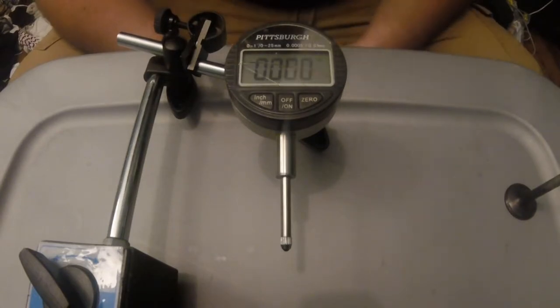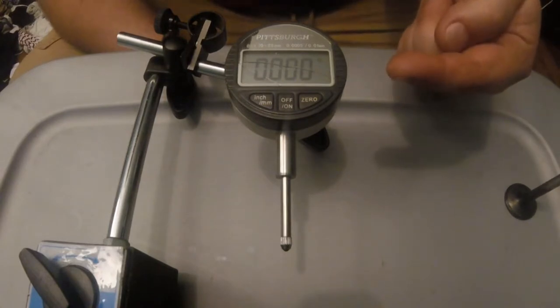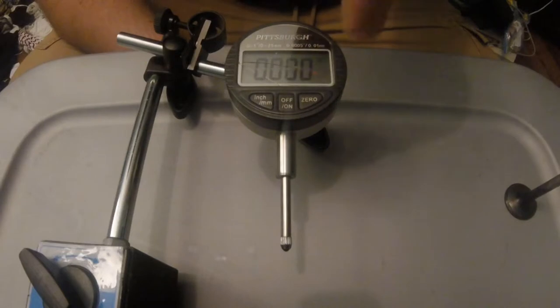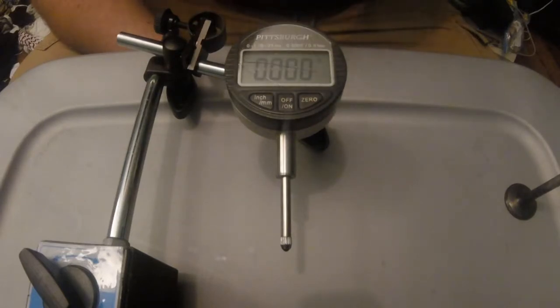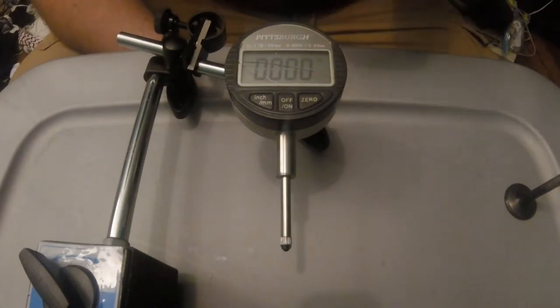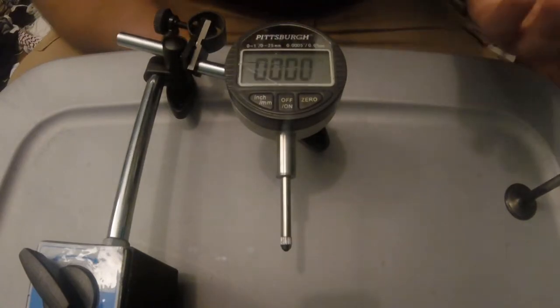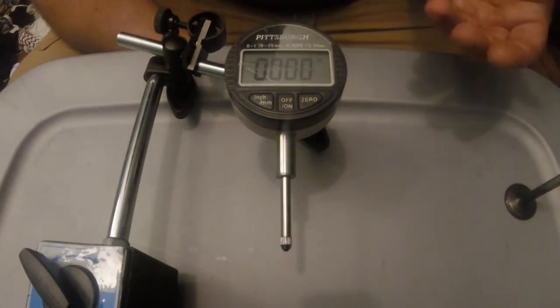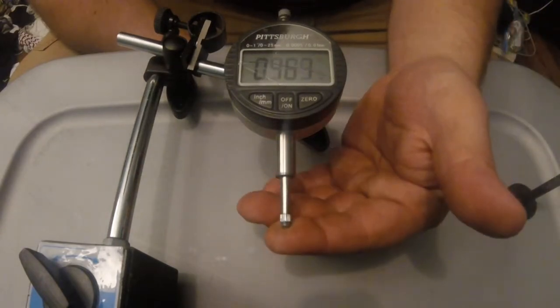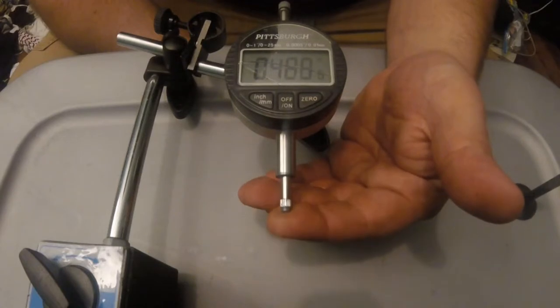Today we're going to be talking about this dial indicator. This happens to be a digital dial indicator as you can see by the fact that it doesn't have a dial on its face and it instead has an LCD screen with numbers on it. It functions the same way. You're going to get measurements on it using this push rod here and you can see that the numbers are changing.